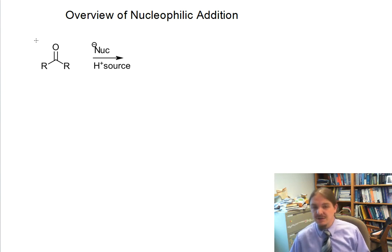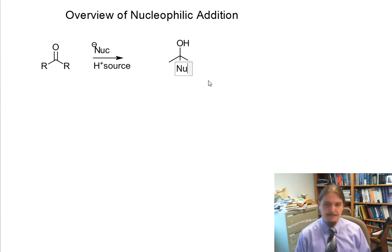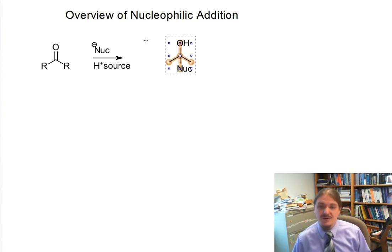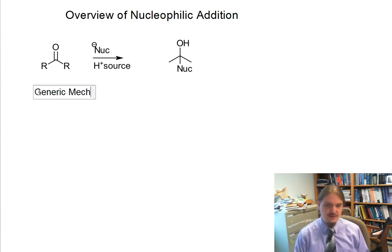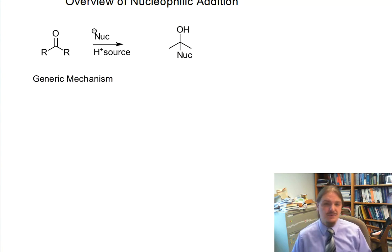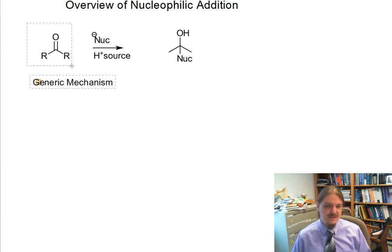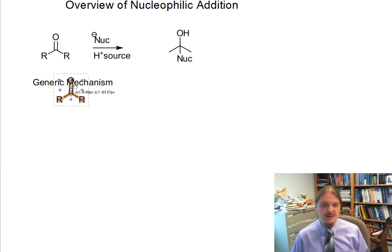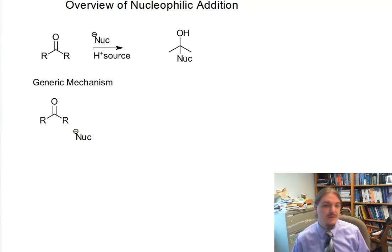And when I get to the videos on the specific reactions, I will share the different types of proton sources. And so this reaction then ends up synthesizing an alcohol with a new bond coming off the carbon to the nucleophile. And I'm going to draw for you a generic mechanism for this reaction to get a sense of what's going on. Get our generic carbonyl compound. And generally, we're talking mostly about aldehydes and ketones here, but we could be talking about other types of carbonyl compounds.